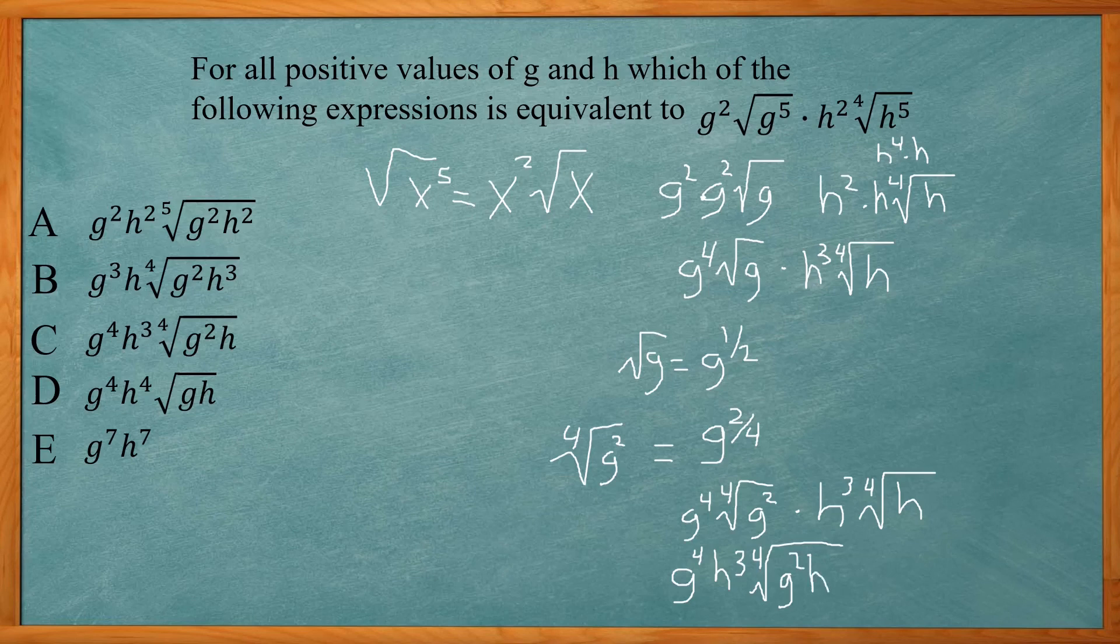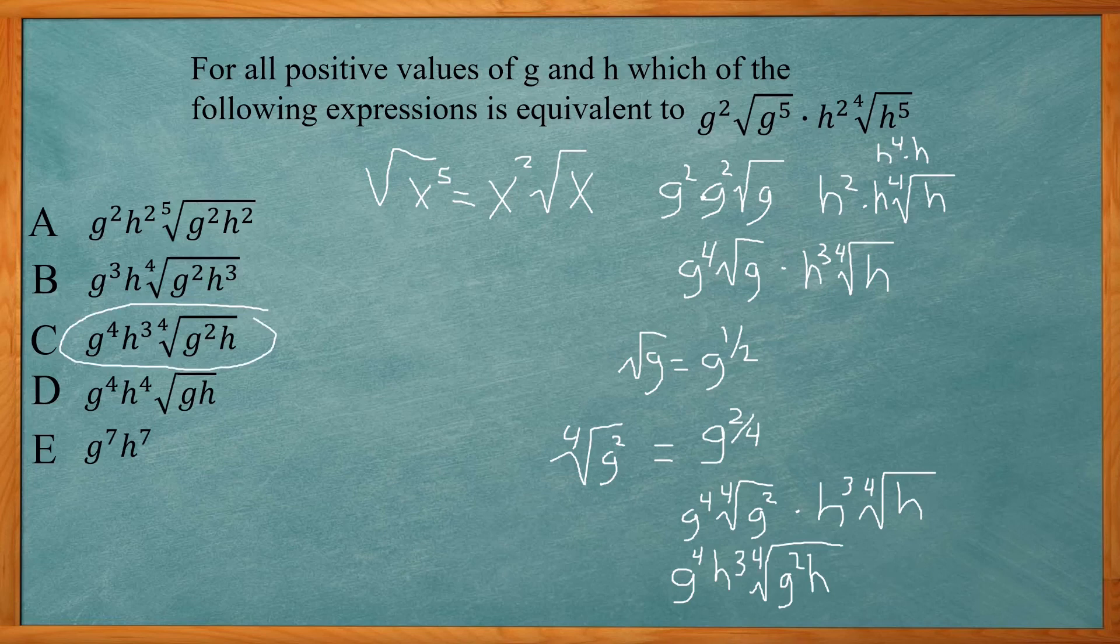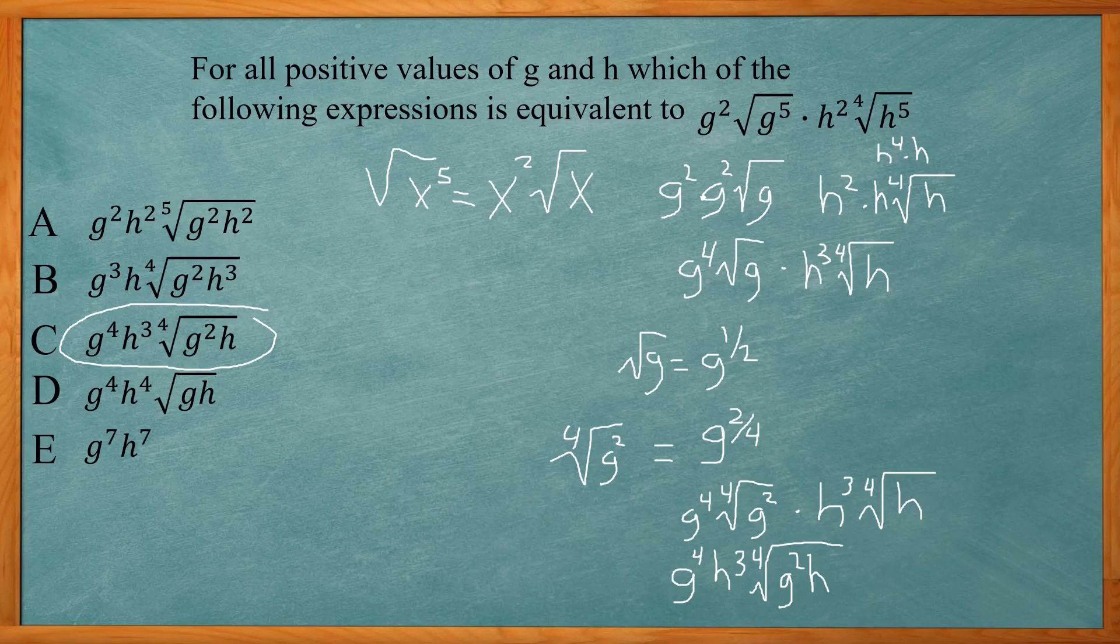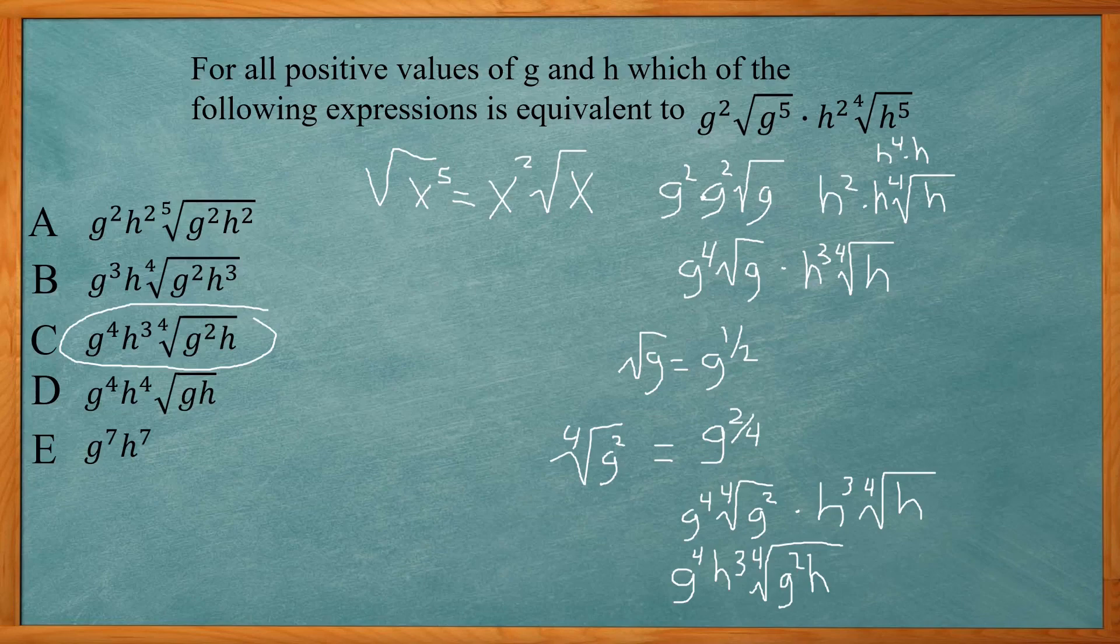I look at my answer choices and see which one matches that. That looks like it's going to be C, g to the fourth, h to the third, fourth root of g squared h. So here we used several properties, changing the root into a fraction, multiplying radicals together, and taking the second or even the third or fourth root of a letter.